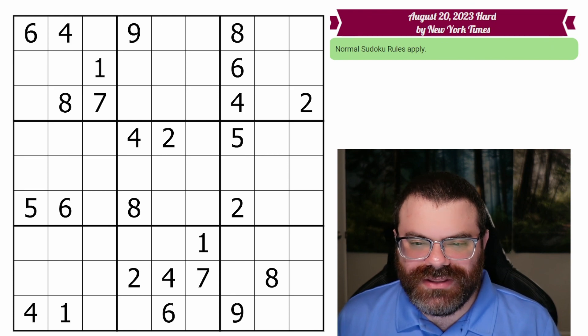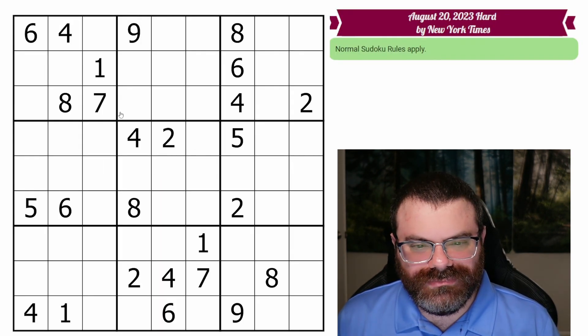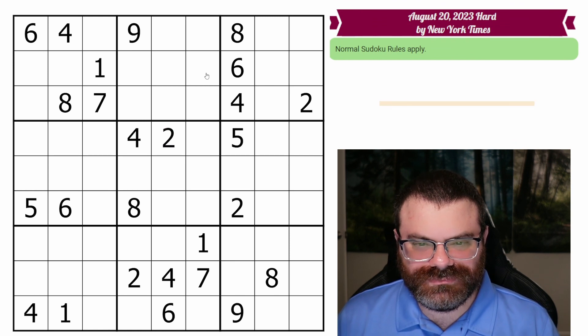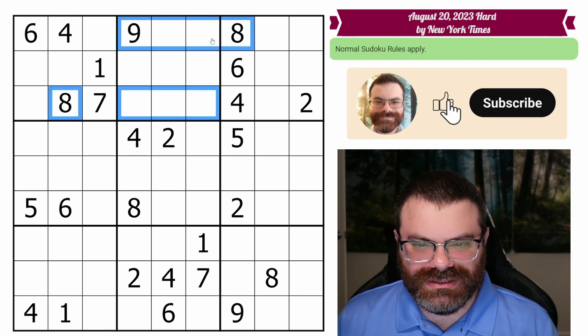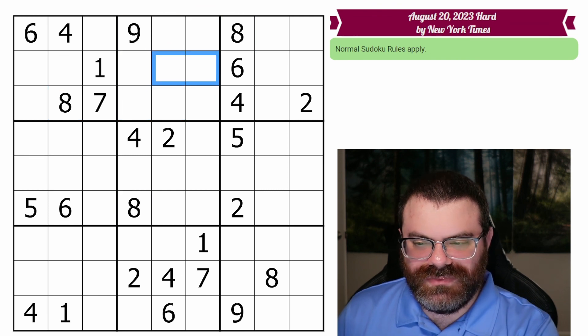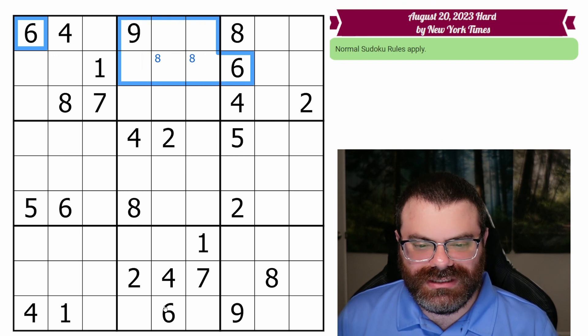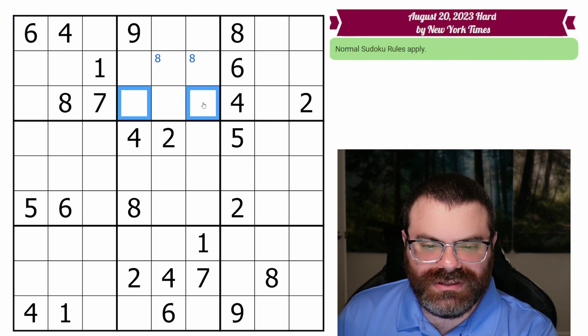There's a link in the description if you'd like to try the puzzle yourself, and I'm going to get started now. All right, I'm seeing we have these two eights and this eight looking up, so eight is in one of these two. We also have two sixes looking in and this six looking up, so six is in one of these two.